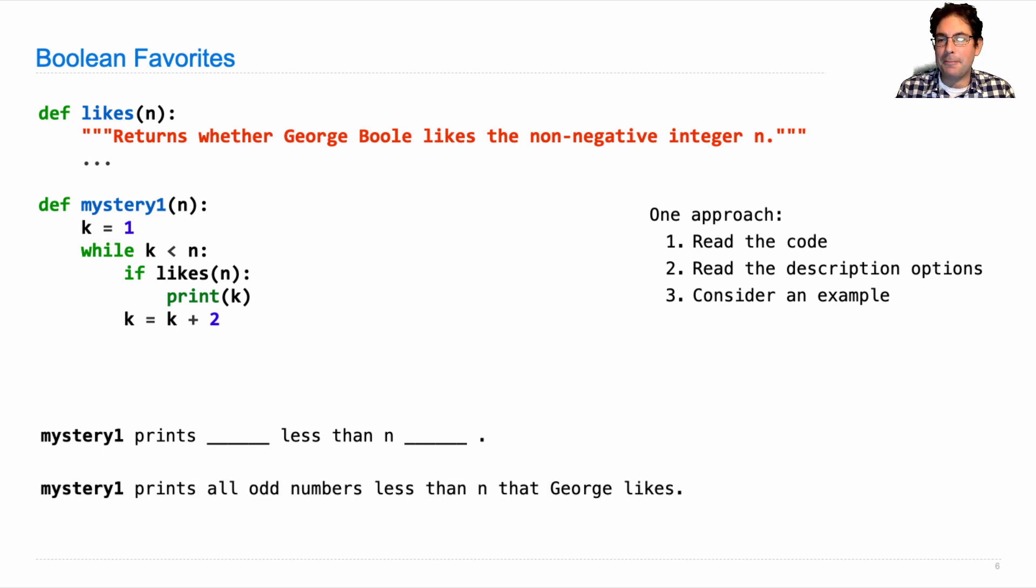So now maybe we look at the options, but let's imagine that there's one like mystery one prints all odd numbers less than n that George likes. Well that looks promising, but don't forget step three: consider an example.